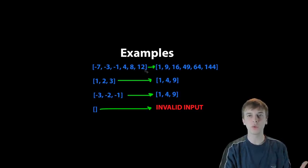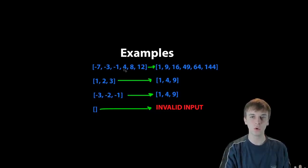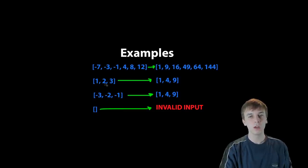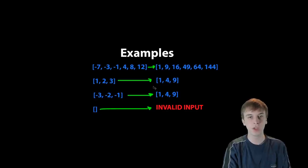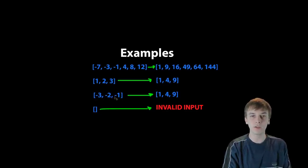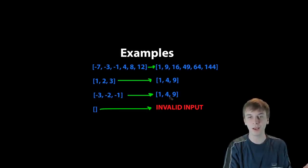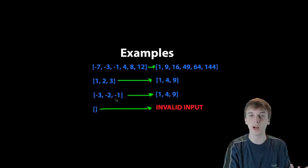This is because negatives squared are positives, and a very low negative squared could be higher than a positive number in our array. So squaring all these numbers: negative one squared is one, negative three squared is nine, four squared is 16, negative seven squared is 49, eight squared is 64, twelve squared is 144. We could also have an input array of all positive numbers — one squared is one, two squared is four, three squared is nine — or all negatives, where negative three, negative two, negative one squared gives the exact same result because the negative squared equals the positive squared.